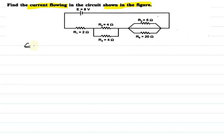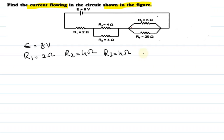The given data is: potential difference E is equals to 8 volts, R1 is equals to 2 ohms, R2 is equals to 4 ohms, R3 is equals to 4 ohms, R4 is equals to 5 ohms, and R5 is equals to 20 ohms.